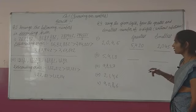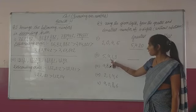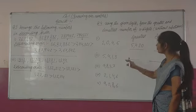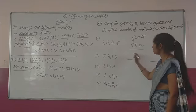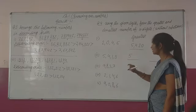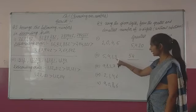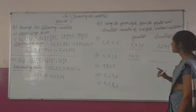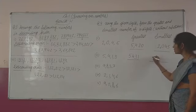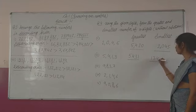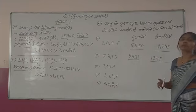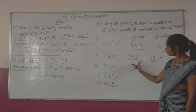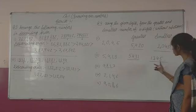Now the next part — second part. Digits are five, four, one, and three. To form the greatest number, the largest digit is five, then four, then three, then one. So greatest is 5431. Now to form the smallest number: the smallest digit is one, then three, then four, then five — so smallest is 1345.